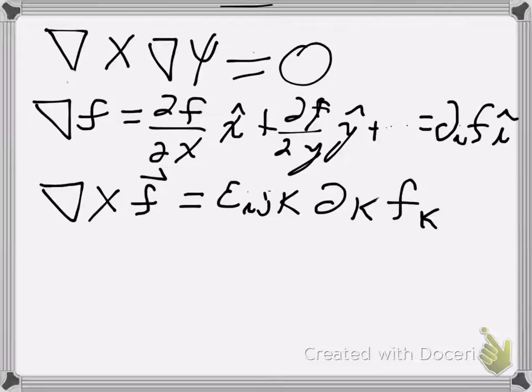Sorry, hopefully you realized I made a mistake there, so these two are not right. We did not get the right answer. So it's the partial j of the kth component of the vector. Alright.